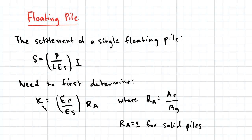First we need to determine the pile stiffness factor K, which is given by this expression here, where EP is the modulus of the pile, and RA is the ratio of the pile section and the gross area bounded by the outer circumference of the pile. This ratio can account for hollow cross sections, and RA will be equal to 1 for solid piles.